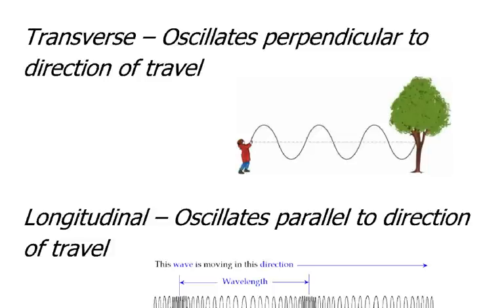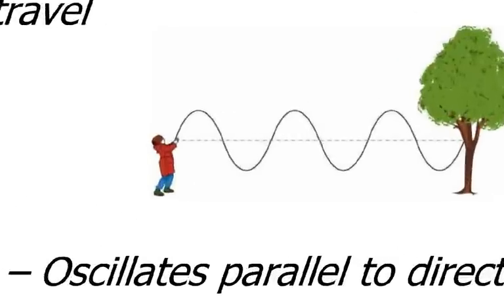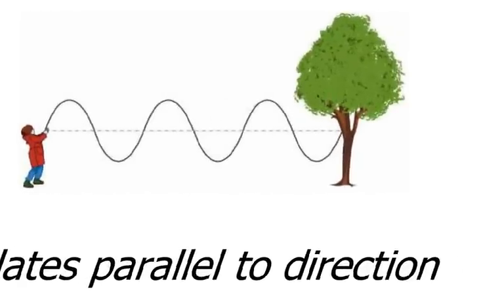All right, so here we have it written out in words. A transverse wave oscillates perpendicular to the direction of travel, as we saw in the previous slide. This young person who is shaking this rope up and down, it produces a transverse wave that travels that direction and oscillates up and down.